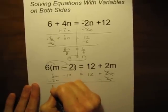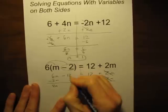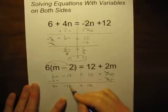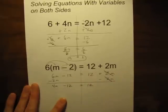6m and negative 2m are like terms. So 6m minus 2m is 4m. Let's just rewrite what's left. Just rewrite the negative 12, rewrite the positive 12 here.